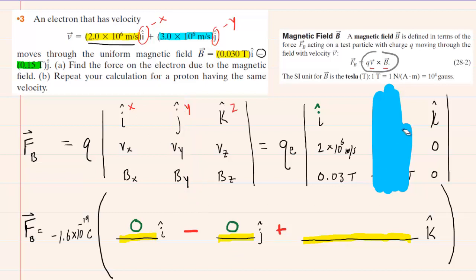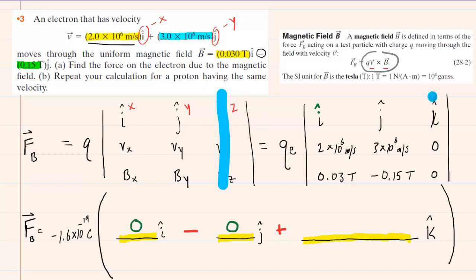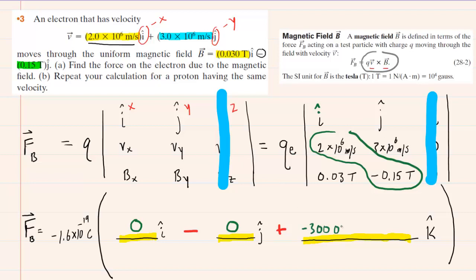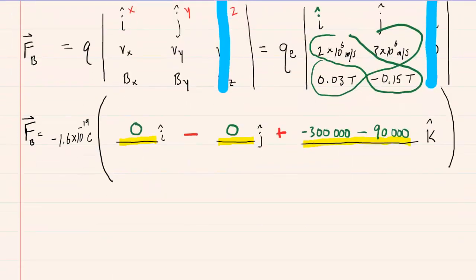Things get interesting when we calculate the z component, or k hat direction. Cover up the k hat column and do the determinant. Multiply diagonally: 2×10⁶ times −0.15 gives −300,000. Then multiply the other diagonal: 0.03 times 3×10⁶ gives 90,000. You always subtract between those two values, so −300,000 minus 90,000 gives −390,000.